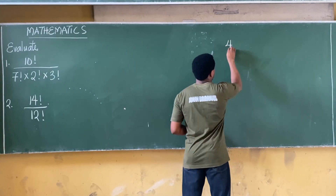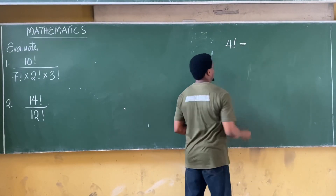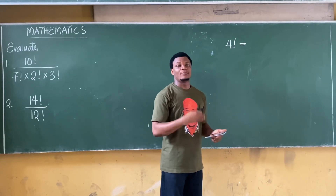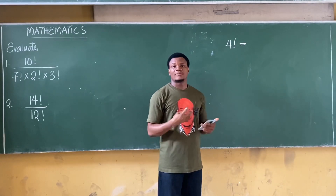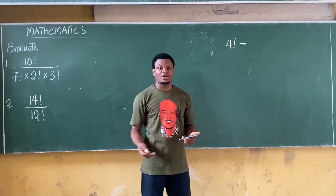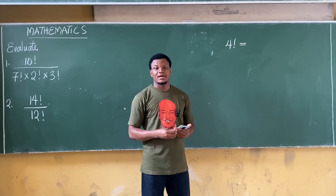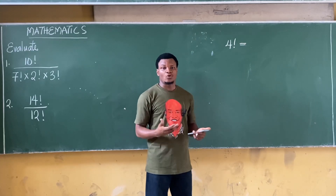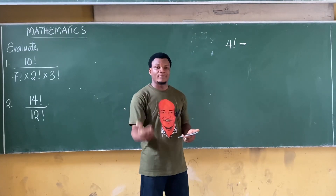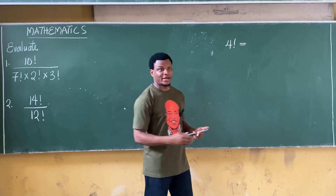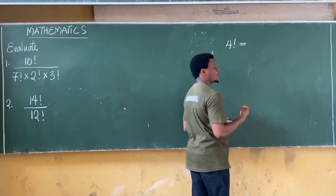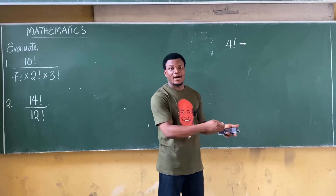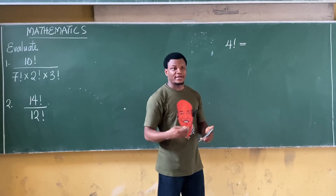So if I have a number such as four factorial, four factorial is simply equal to — we said it is the multiplication of consecutive positive integers. An integer is simply a positive or negative whole number, so I'm multiplying positive whole numbers in descending order. From four, I have three, and then two, and then one.